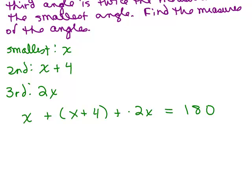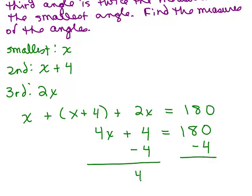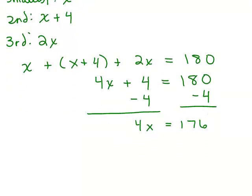We can solve that on the left side by adding the like terms. We have x plus x plus 2x, those are the like terms on the left side. So we have 4x plus 4 equals 180. Then from here, we could subtract 4 from both sides. That gives me 4x is 176.